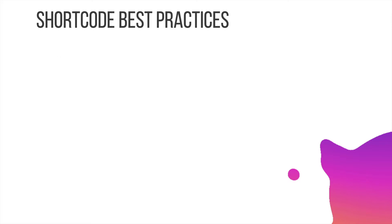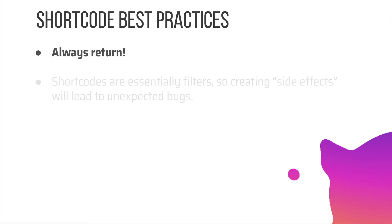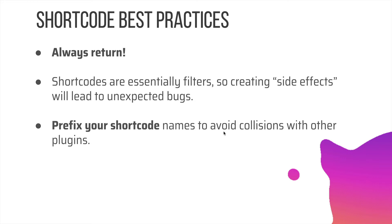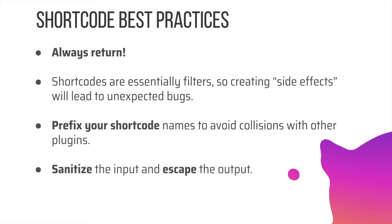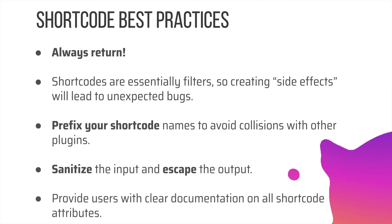There are some best practices with shortcodes. First, always return — shortcodes are essentially filters, and creating side effects will lead to unexpected bugs. A side effect is when an operation modifies some state values outside its local environment — that is, it has an observable effect besides returning a value to the invoker. You should also always sanitize the input and escape the output, and provide users with clear documentation of all shortcode attributes to make it easier for them to know how to use it.